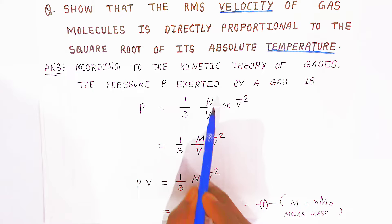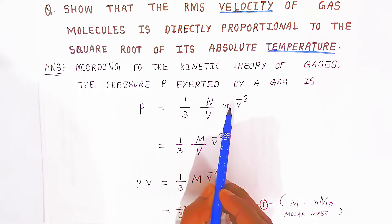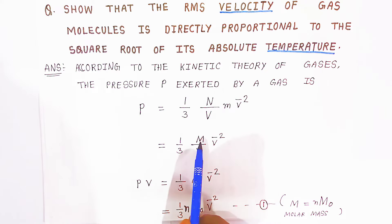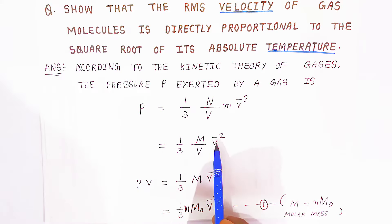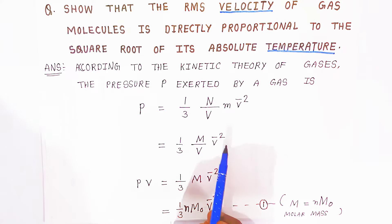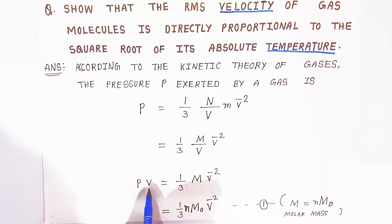Now, N into M is nothing but the mass of the gas — the number of molecules times the mass of one molecule. Mass upon volume is nothing but density. So here, pressure equals (1/3) × (mass/volume) × v̄². Note that this V̄ is the velocity of the gas molecule, not the volume.